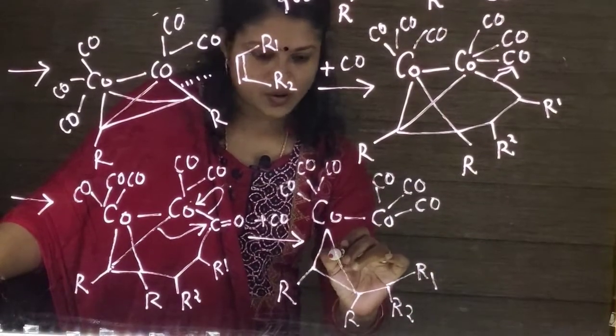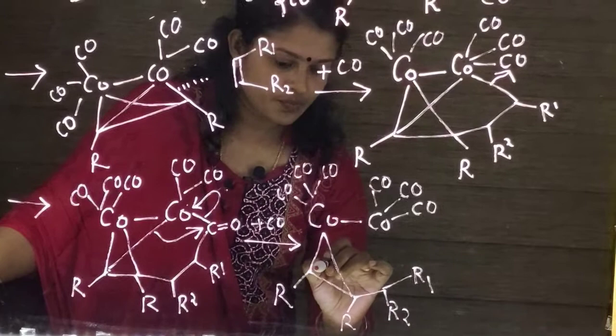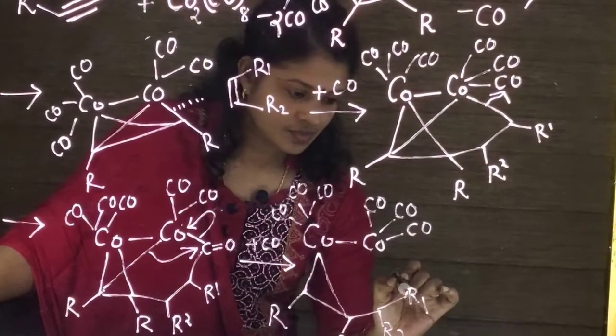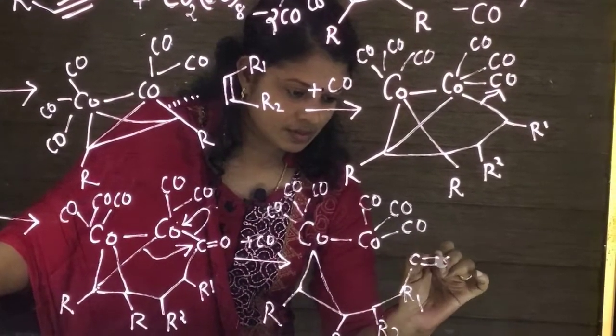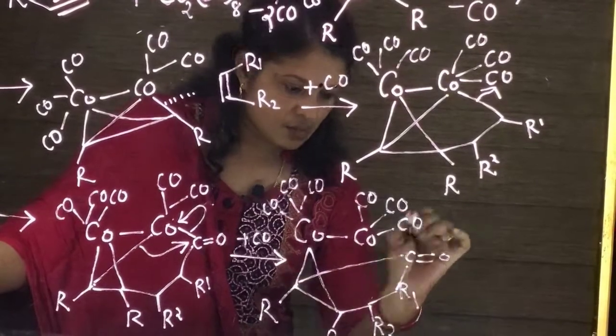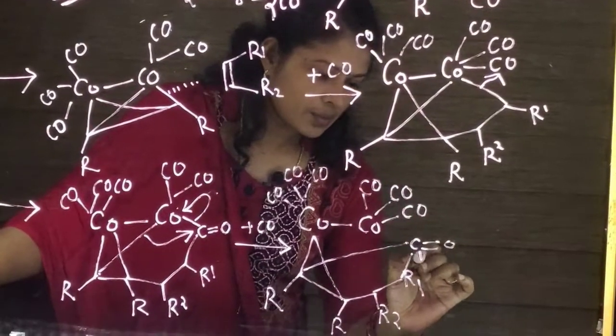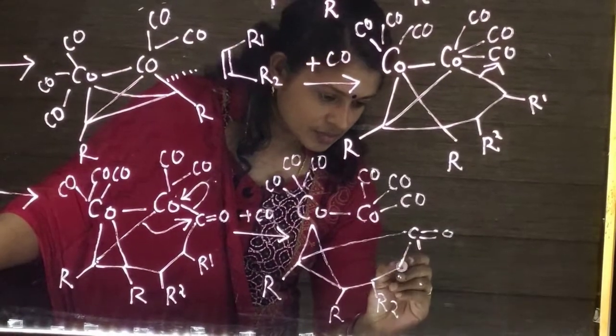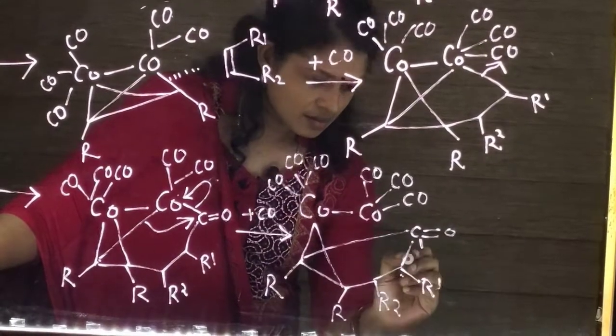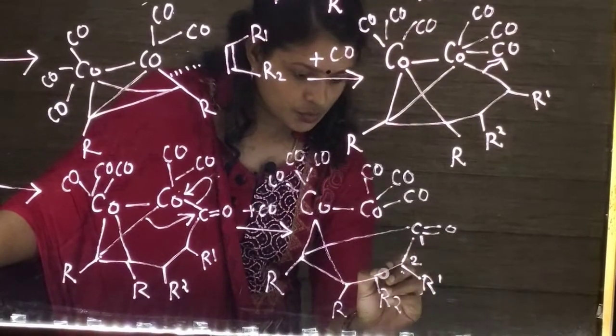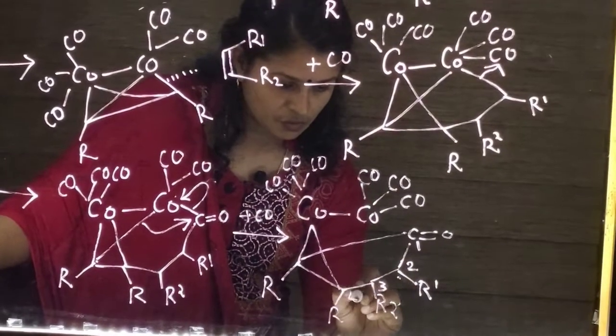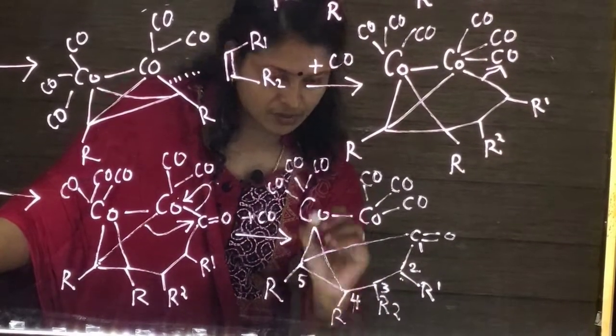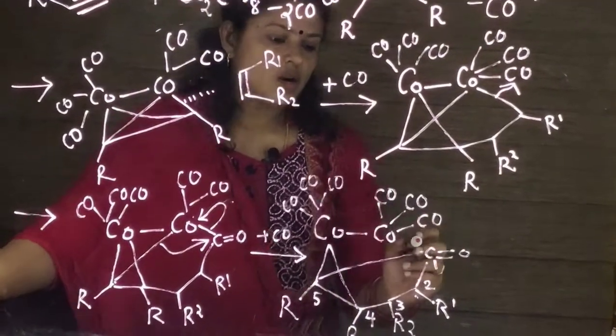And now this bond is now attached to this carbonyl group. So now a five member ring, one R1, one, two, three, four, five. A five member ring is obtained.